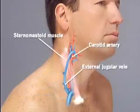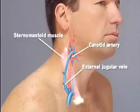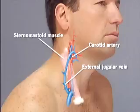Deep to the sternomastoid run the great vessels of the neck: the carotid artery, and the external jugular vein, which passes diagonally over the surface of the sternomastoid.